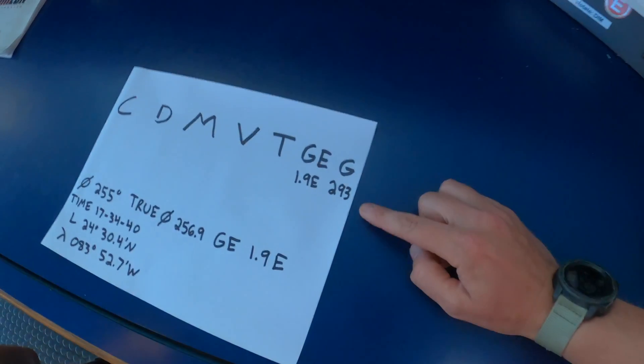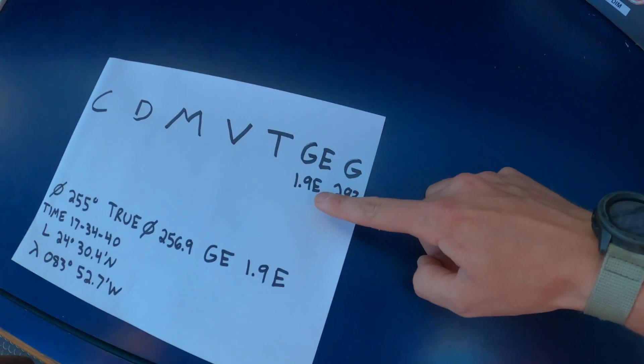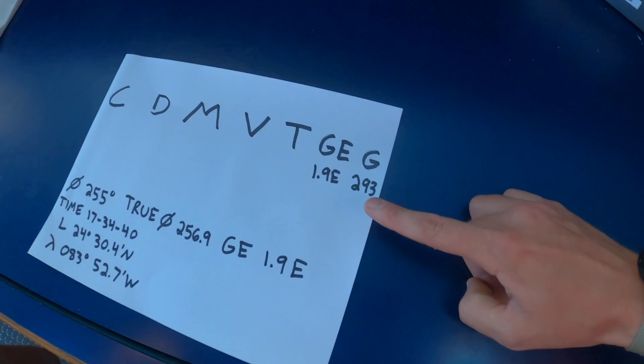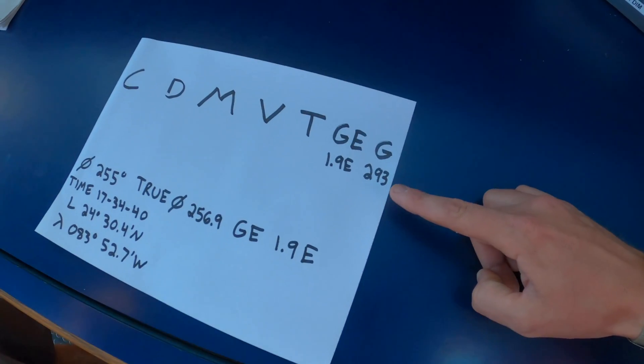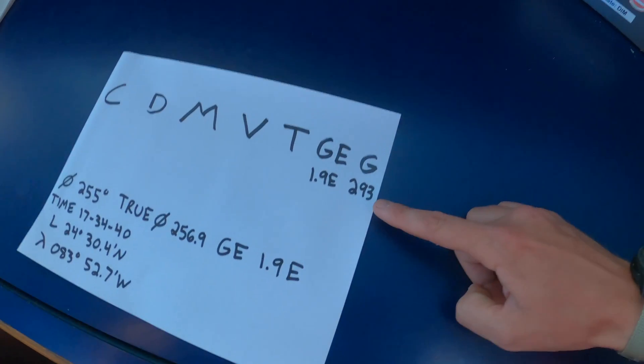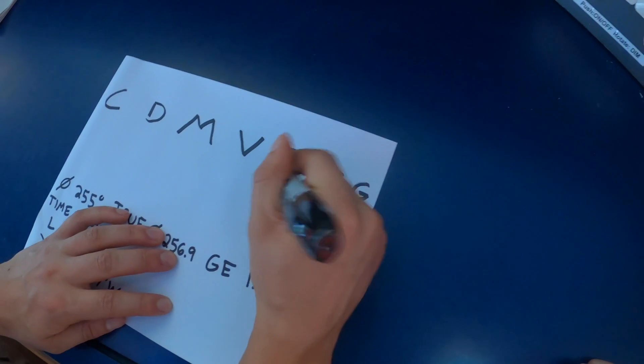So since the gyro heading is 293 degrees and we know the error is 1.9 degrees, that means the actual true heading that we're steering, it's error east compass least, so that means you have to add the error. That would be 294.9 degrees.